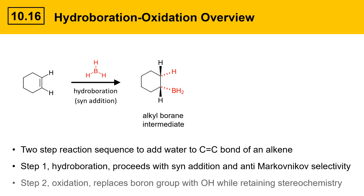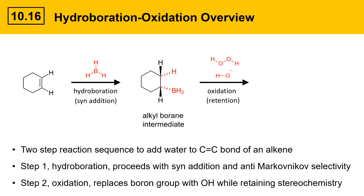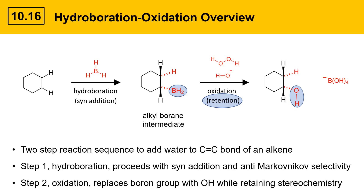In the second step, oxidation, the boron is replaced by an OH group and this happens with retention of stereochemistry at the carbon that the boron is attached to. The oxidation occurs when hydrogen peroxide, H2O2, reacts in the presence of hydroxide with the alkyl borane intermediate. The result is an alcohol and an oxidized boron species. You can see the retention of configuration in the orientation of the groups highlighted with the blue circles. Boron is on a dash bond in the intermediate alkyl borane species and that stereochemistry is retained in the product alcohol.